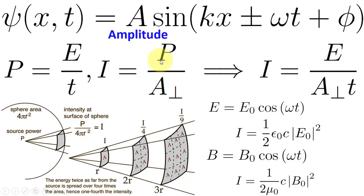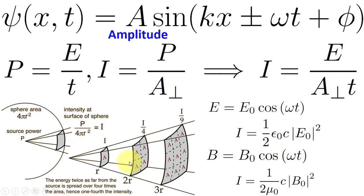Intensity is power per unit perpendicular area. If we have a source with power P, the sphere area at distance r is 4πr². The factor 4π is the solid angle subtended by considering all directions. If we go to distance 2r, the intensity decreases by a factor of 4, because replacing r with 2r gives 1/(4r²). The unit area effectively becomes 4 times larger as we go to 2r. At distance 3r, the intensity drops to 1/9 of the original. As we move away from the source, intensity decreases as the square of the radial distance.